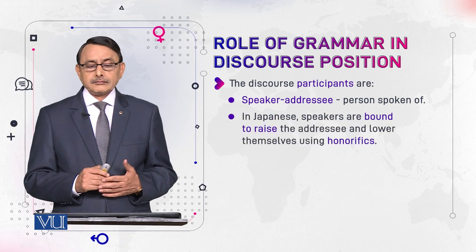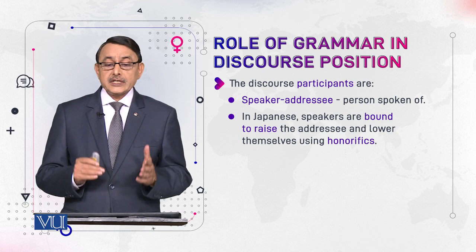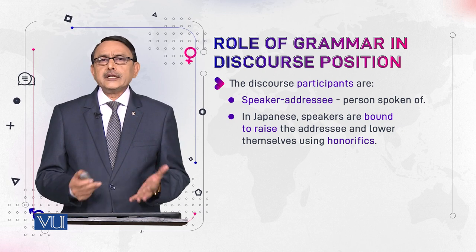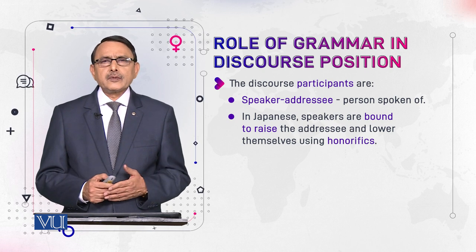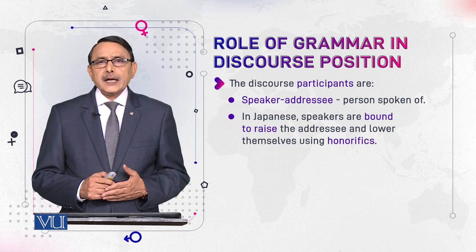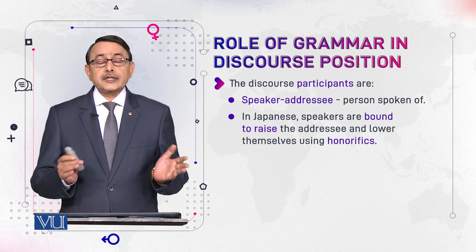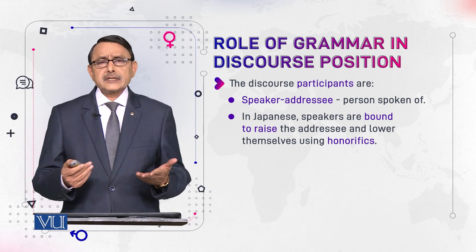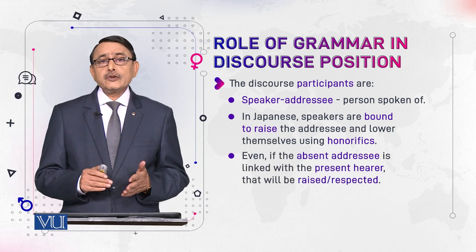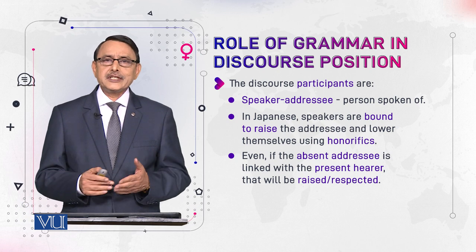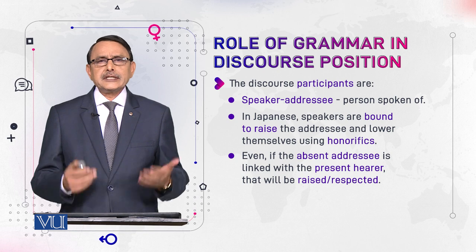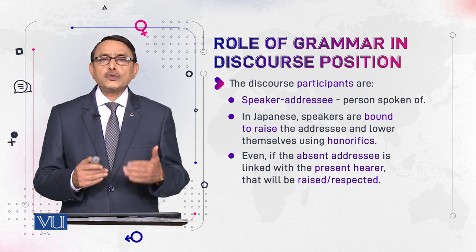In Japanese, speakers are bound to raise the addressee and lower themselves. Whenever they talk about the addressee, they enhance the person's honor by using terms like 'madam' or 'sir', by eulogizing and praising that person, and by using expressions like 'my humble opinion'. This is so that the addressee should feel honored and elevated. Even when they talk about persons linked with the addressee — their wives, elders, relatives — they show the same kind of respect.